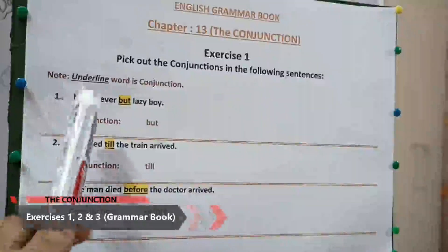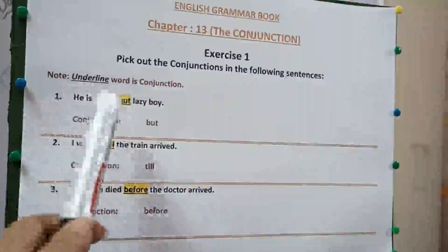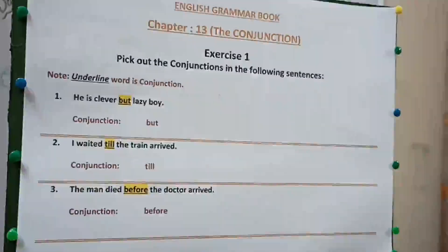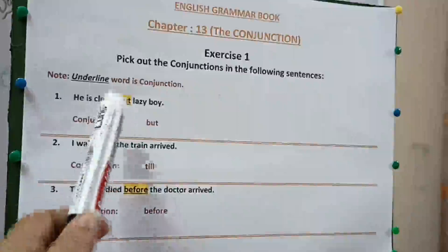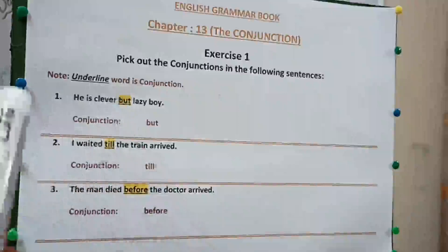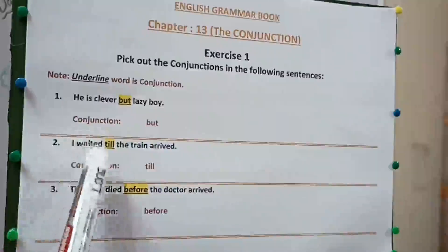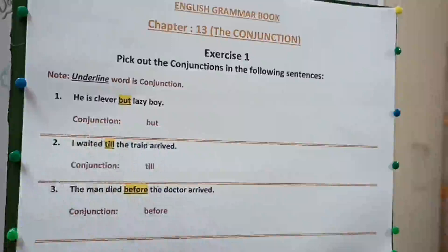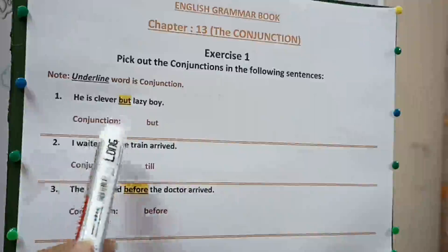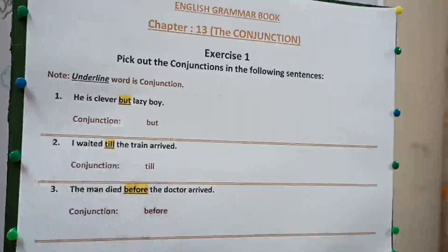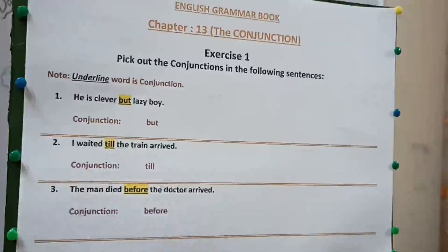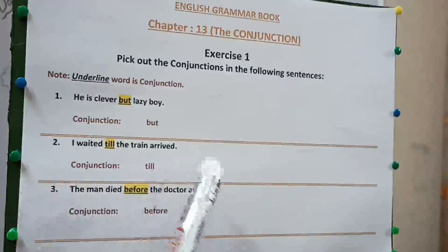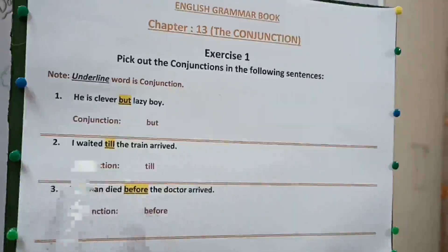The first one is: he is clever but lazy boy. The conjunction here is 'but'. Next: I waited till the train arrived. Here the conjunction is 'till', specifying the time. The man died before the doctor arrived. Here the conjunction is 'before', again specifying the time.